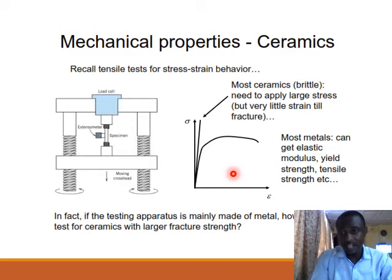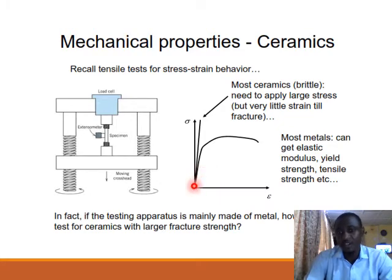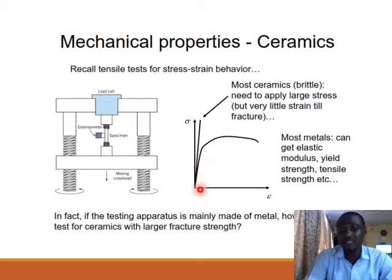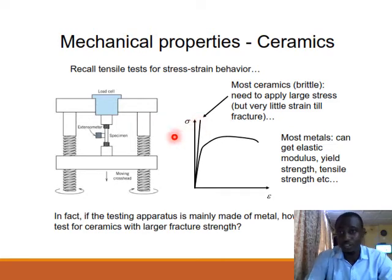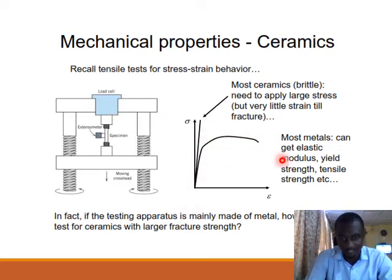For ceramic materials, since they have no form of plastic deformation, a stress-strain test yields just a straight line — only a proportional elastic region, then a peak point where the material fractures straight away. Most ceramics are brittle and require a very large stress to fracture, unlike metals and polymers that can endure plastic deformation.